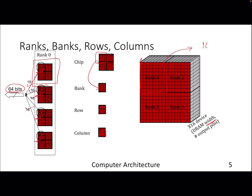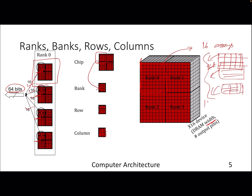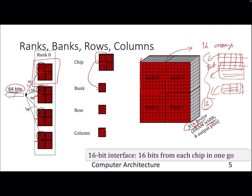Each bank has 16 arrays, and an array is a collection of rows and columns. Each of these arrays is sending one bit, so from all of them you get one bit per array, giving you 16 bits total from one particular DRAM chip. This is called the device width, named as DRAM x16, where x16 stands for 16 bits. So from one chip we get 16 bits of information in one go.